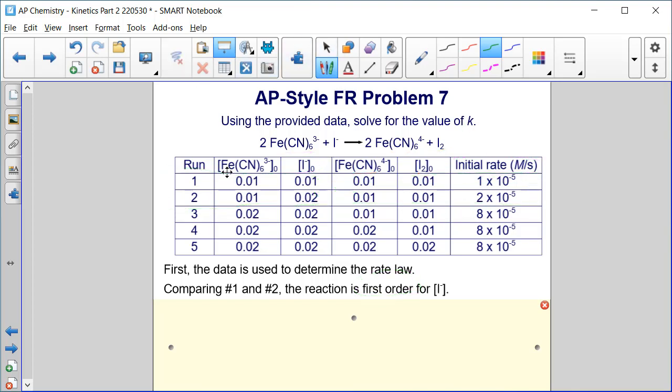Now let's look at runs two and three. Everything is constant, all these concentrations are constant except Fe(CN)6^3-.